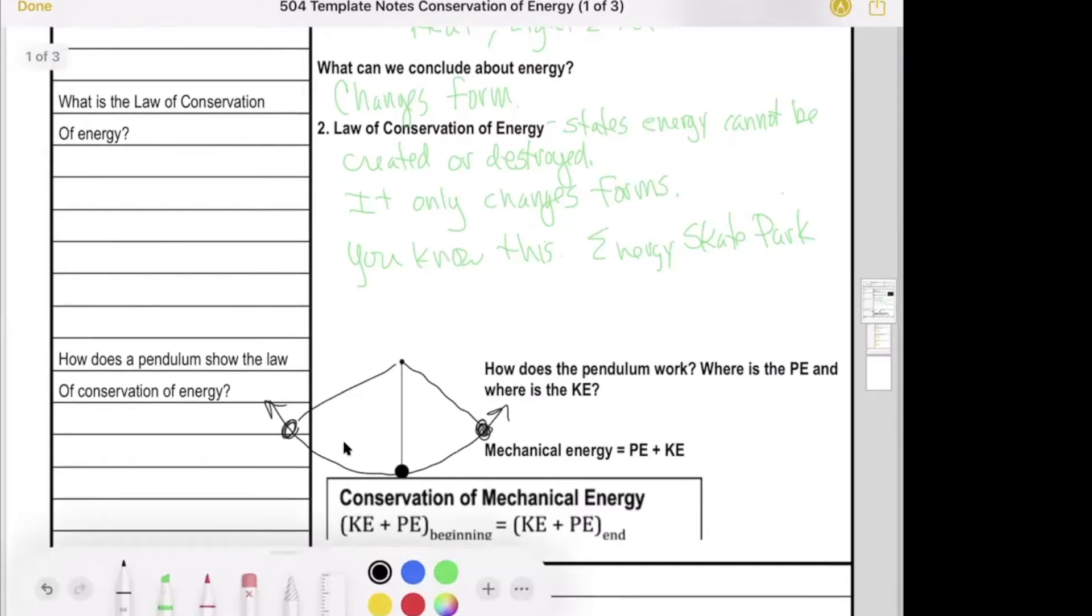It's all potential energy up here at its highest point, just like the skateboarder. But when you get down to this bottom part, it's all kinetic energy. It's as low as it can go, so it has no more height and it's moving as fast as it can.